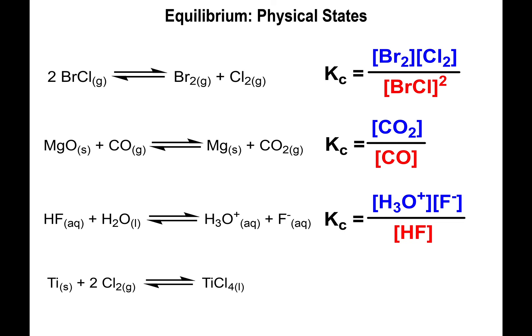The equilibrium constant cannot be zero or negative, so even though there's nothing to include on the product side, you must place a one in the numerator. That way you're not changing the concentration of products but also not making K equal to zero. On the reactant side, Ti(s) doesn't appear; Cl₂ does, with a balancing coefficient of two, so it's [Cl₂]².